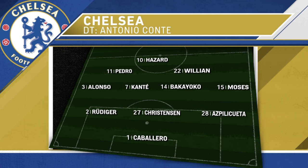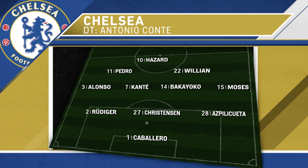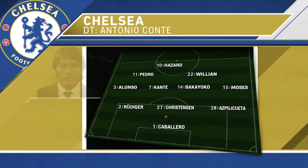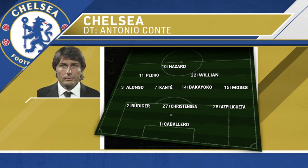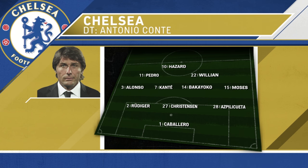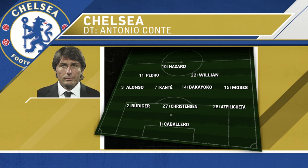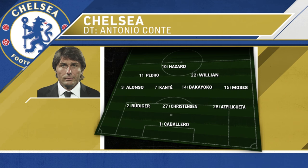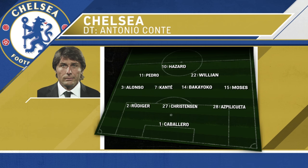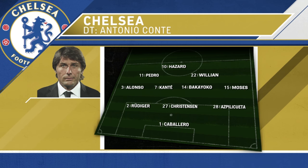The one change from Chelsea from the previous game is Hazard goes in as the number nine, with Willian and Pedro coming in. Underneath them as the two holding midfielders you have Kante and Bakayoko. Then Azpilicueta, Christensen, and Rudiger make up the back three with Alonso and Victor Moses as the wingbacks.